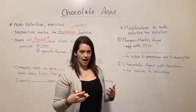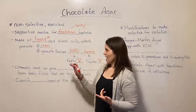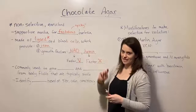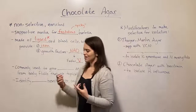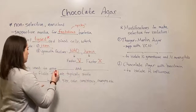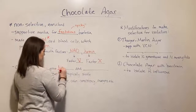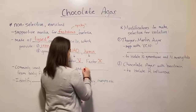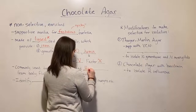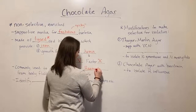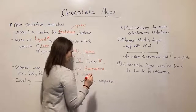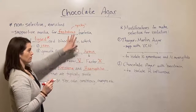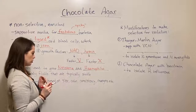Now let's talk about the kinds of bacteria that we're commonly trying to grow — specifically, which fastidious bacteria are we trying to grow on chocolate agar? These are different species of the genus Neisseria and the genus Haemophilus. These two genera, Neisseria and Haemophilus, are the fastidious bacteria that we're trying to grow with chocolate agar.